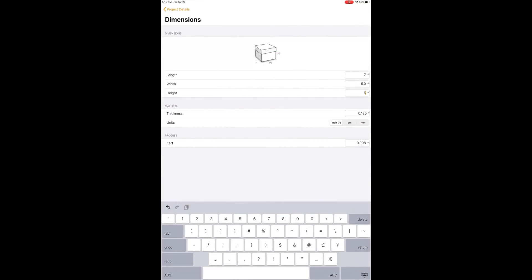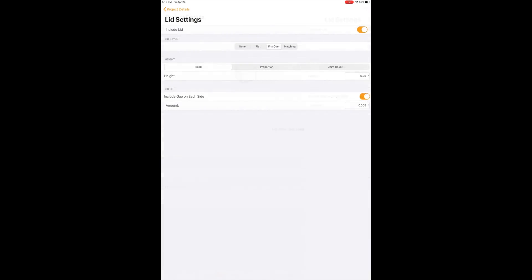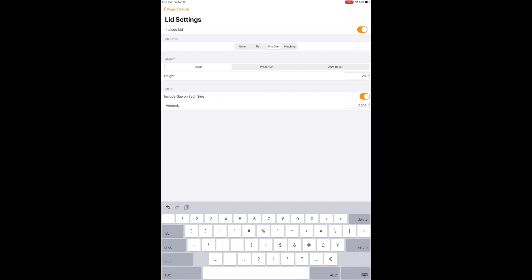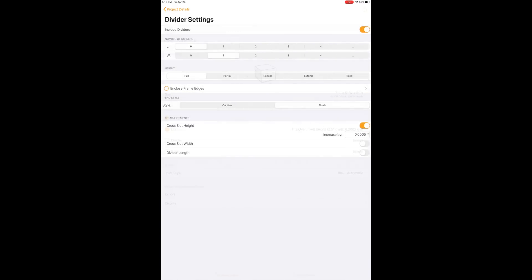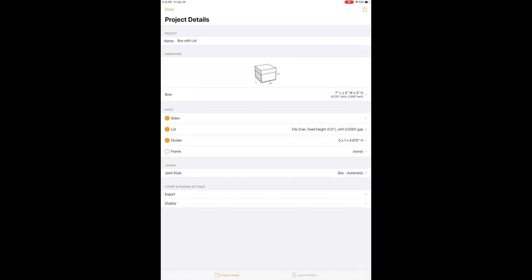To make the design for the box I used the Box-O-Matic app on my iPad. All you have to do is enter in the dimensions of your finished box along with the other info like kerf of the laser and the thickness of your material. I split my box into two compartments and added a lid.